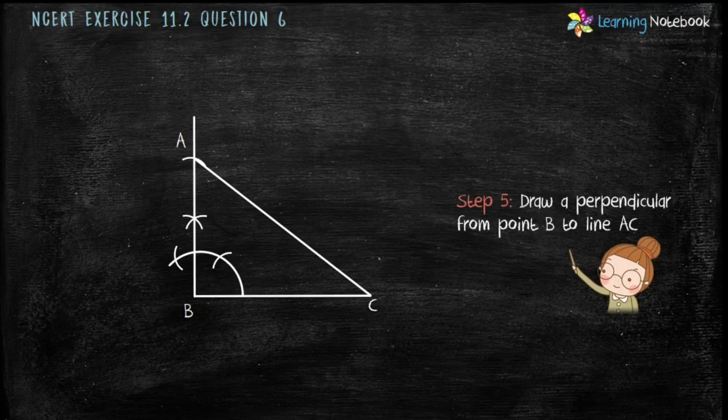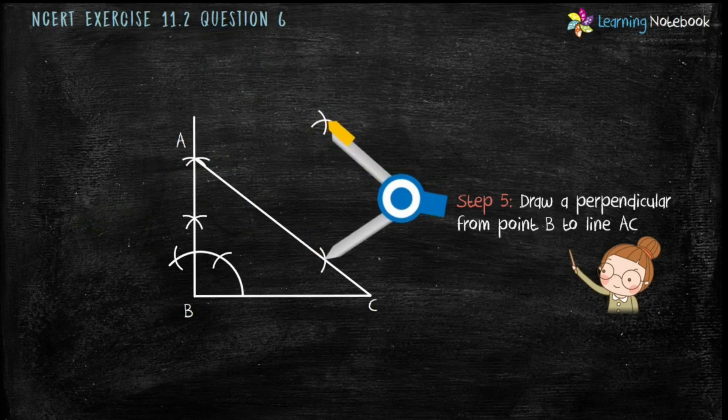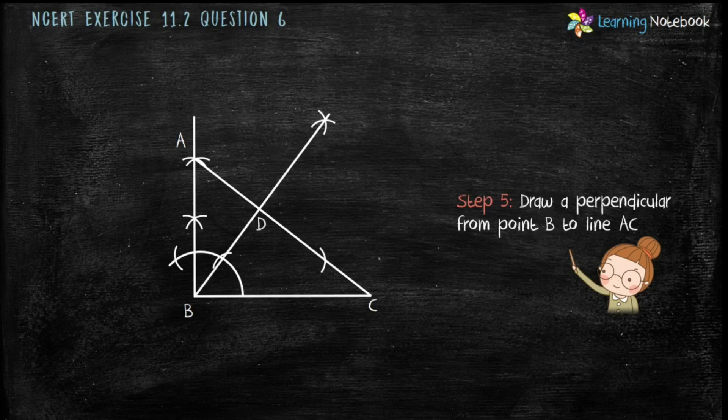Next step is draw a perpendicular from point B to line AC as shown here. This perpendicular cuts the line AC at a point, name it D.